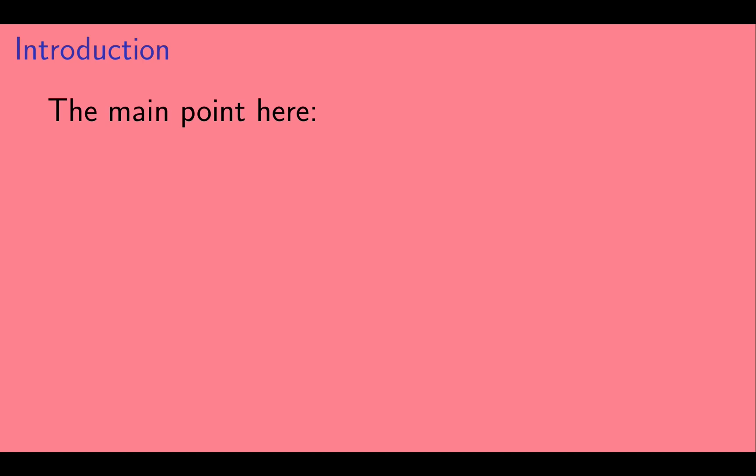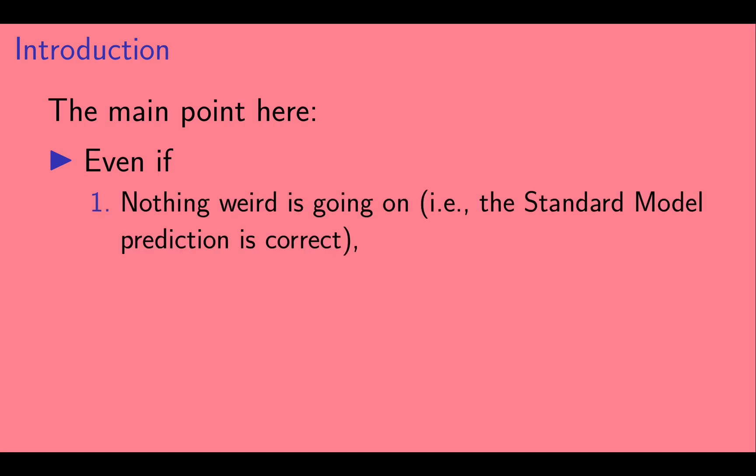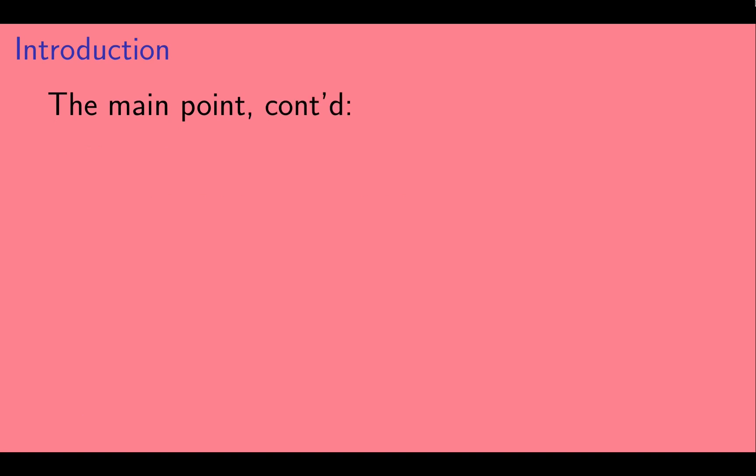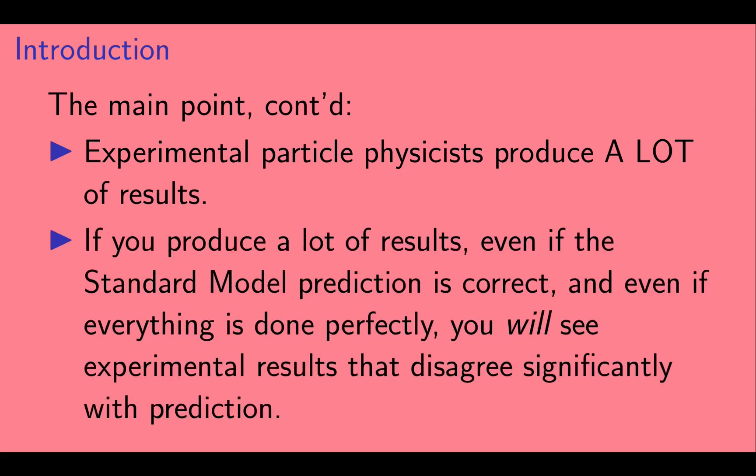Okay, let me just clarify what the main point is of this video. Even if nothing weird is going on, by which I mean there is no new physics relevant to a particular measurement, and the standard model prediction is essentially correct, and if all the calculations are done correctly, and if all the experiments are carried out correctly, some results will disagree significantly with the prediction of the standard model. Additionally, experimental particle physicists produce a lot of results. And if you produce a lot of results, even if the standard model prediction is correct, and even if everything is done perfectly, you will see experimental results that disagree significantly with prediction.